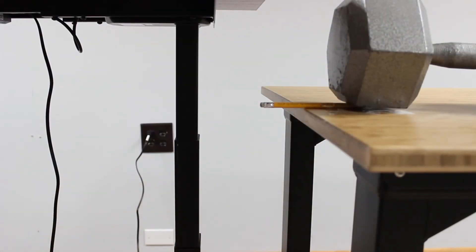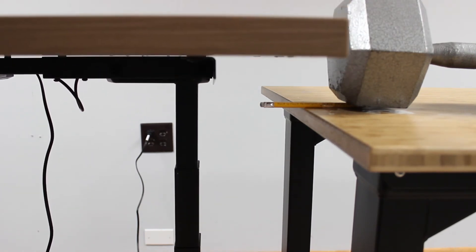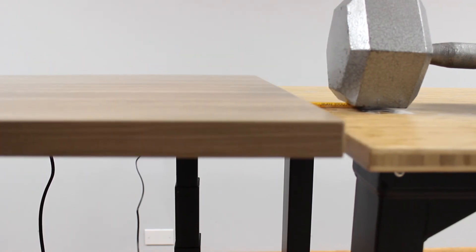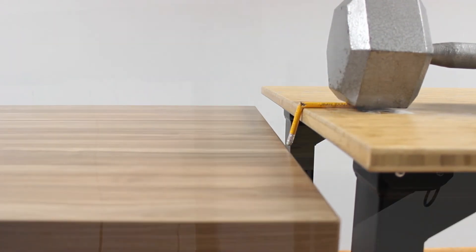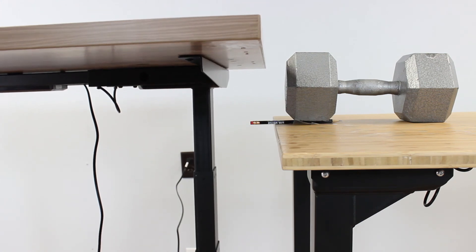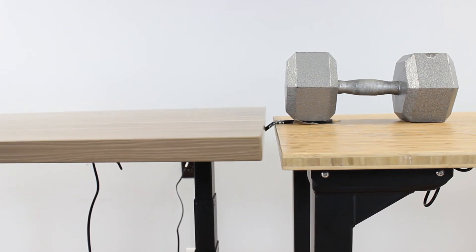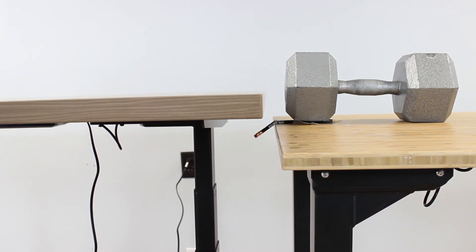Now next we'll be using two number two pencils and this first test it actually makes another clean break through the pencil. Now the second pencil we use it actually requires a little bit more force but you can see that it has no problem breaking the pencil and then the anti-collision engages and brings the desk back up.